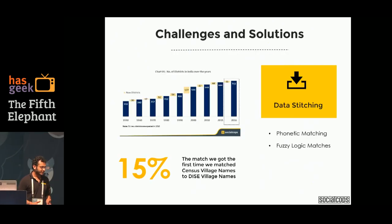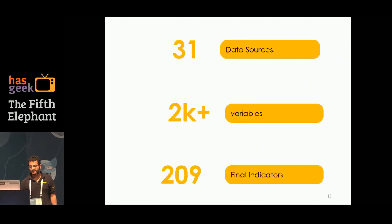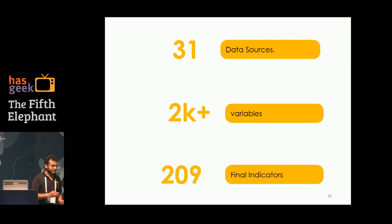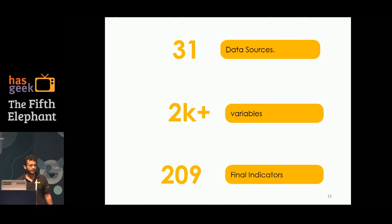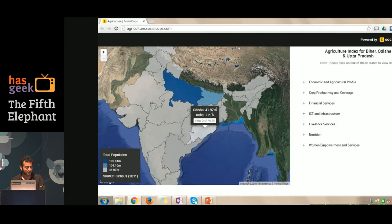Using all these public datasets, I did a project last year where I collated 31 different datasets, crunched 2,000 plus variables from those 31 datasets, and came up with 209 impact indicators that could help a philanthropic organization drive decisions in the agriculture sector in India. I'd like to take you through the dashboard that we finally built using this dataset.